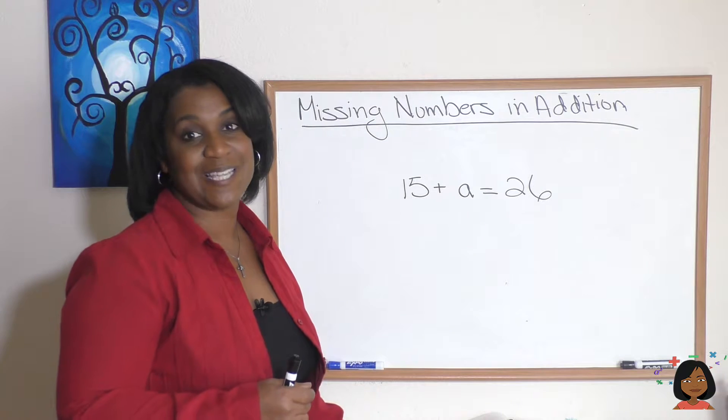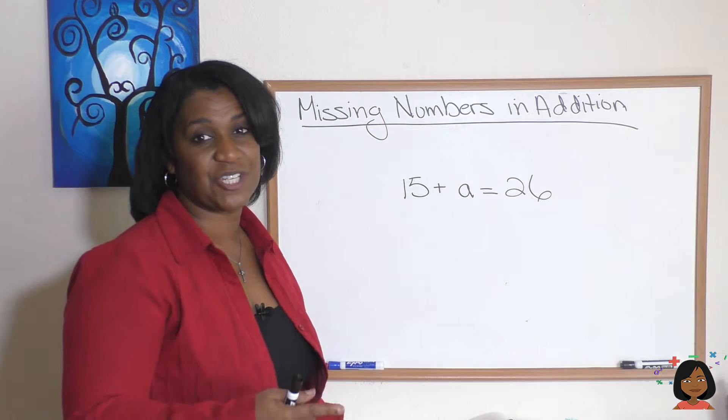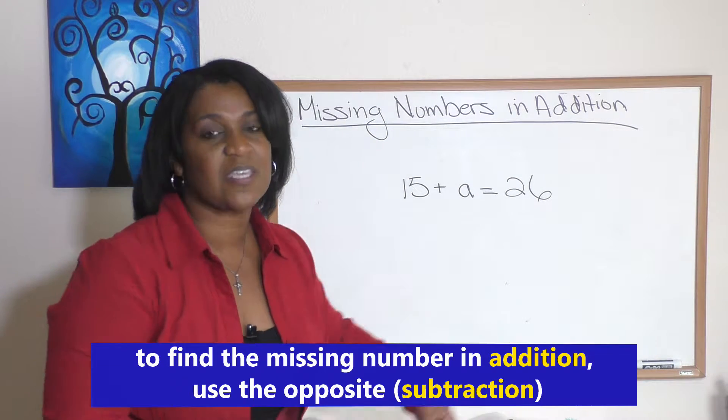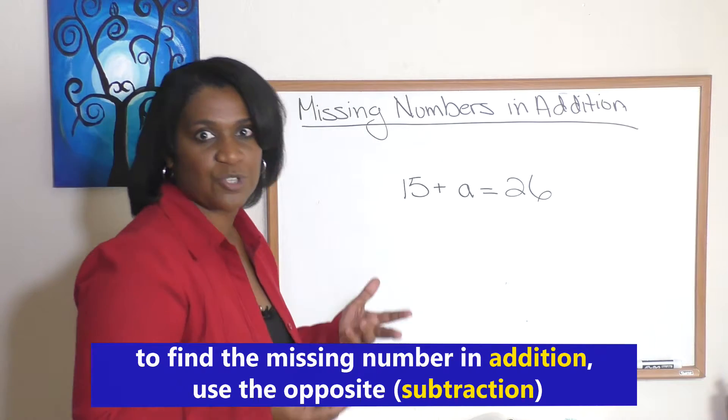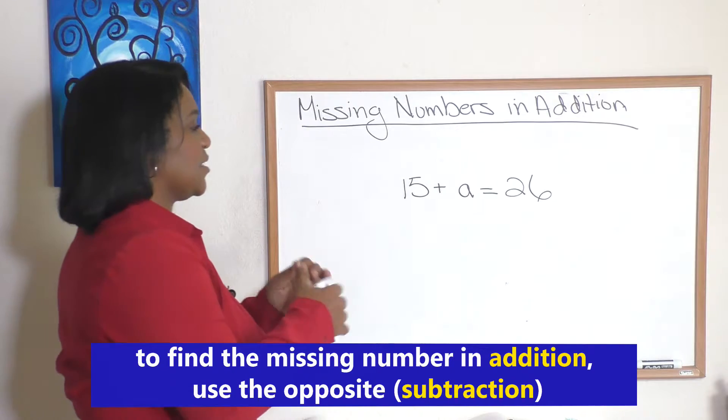Well, the rule for addition, a missing number in addition is you do the opposite to find it, which means this is an addition problem. We're going to use subtraction to find our missing number.